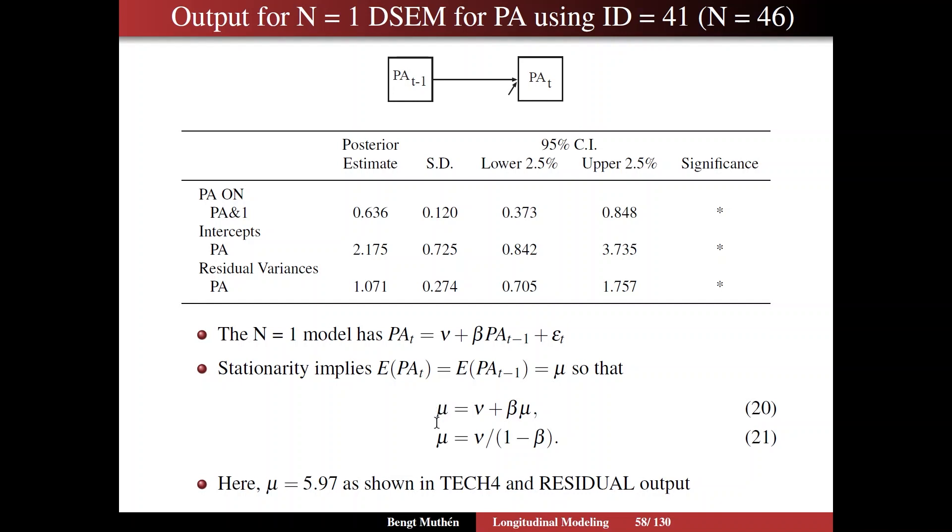We can move that over to the left and divide through by 1 minus beta, and out comes the mean expressed in terms of parameters that are printed in the output. In this case, it turns out to be 5.97. That's seen in tech 4 and the residual output. The variance that we talked about before, although it's not printed in the regular output, you can find it in tech 4 and the residual. You don't have to add the model constraint that I talked about, but you get the standard errors if you do that. So this person is on average 5.97, and we recall that the mean for everybody was 5.76. So this person is slightly higher on the positive affect scale.